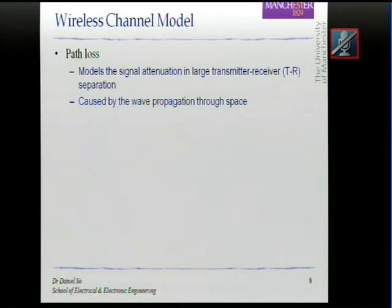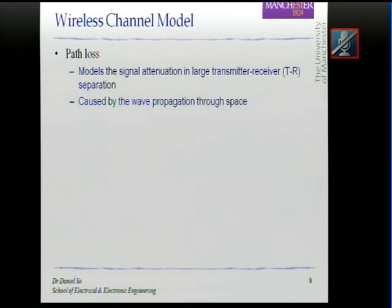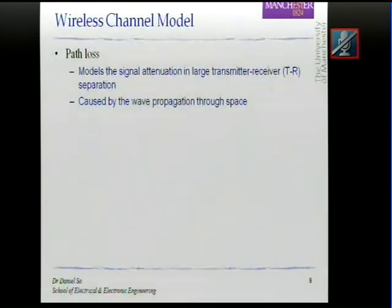If you have a base station somewhere and you are very far away, you want to know how the signal attenuates over that long distance, because propagating a signal over distance requires higher power. For example, if I want to shout loud enough for you in Pakistan to hear me, I would have to shout very, very loudly for the signal to propagate through the atmosphere — which is of course not feasible. Path loss categorizes this kind of attenuation caused by wave propagation through space.